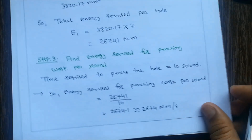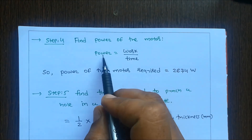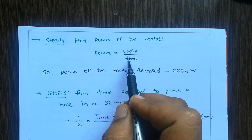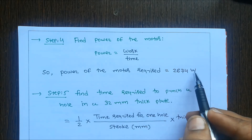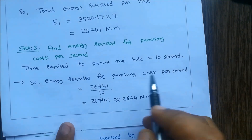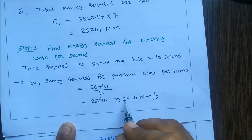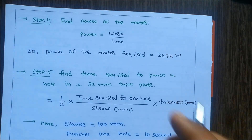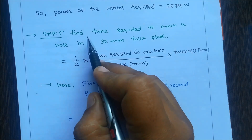Step 4: Find power of the motor. Power = work / time. We already found punching work per second = 2674 N·m/s, so power of the motor required is 2674 watts.